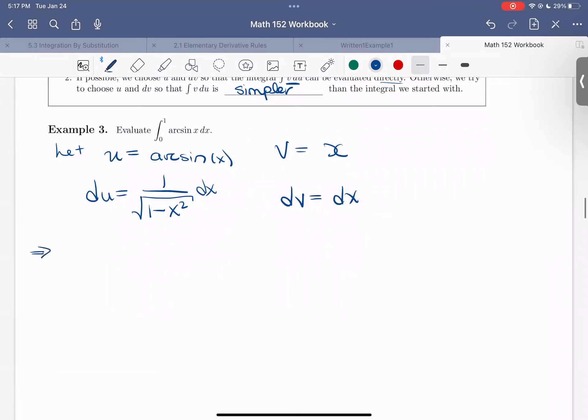So therefore, what did we find? Well, using integration by parts, we have that the integral from 0 to 1. And maybe I won't put bounds yet. I'm just going to leave it as the integral, and then we'll figure out bounds in a little bit. So the integral of arc sine of x dx is equal to u times v. So arc sine times x. Arc sine of x times x minus the integral of v du. So x over square root of 1 minus x squared dx.